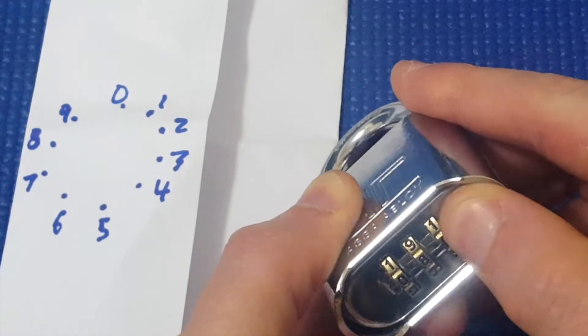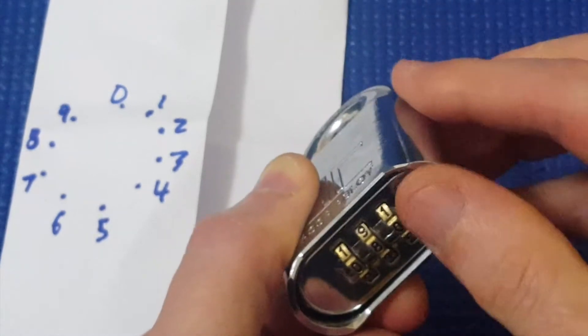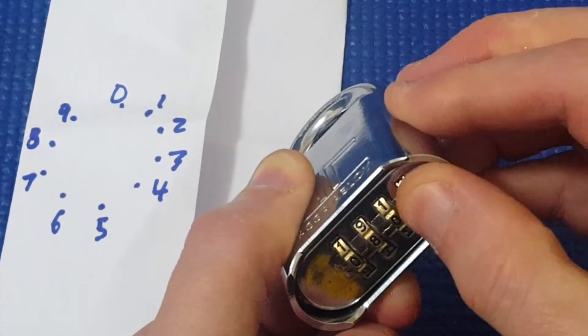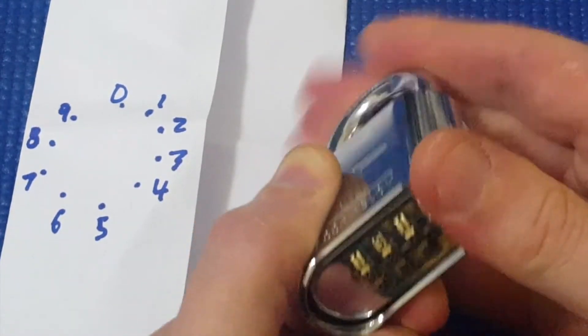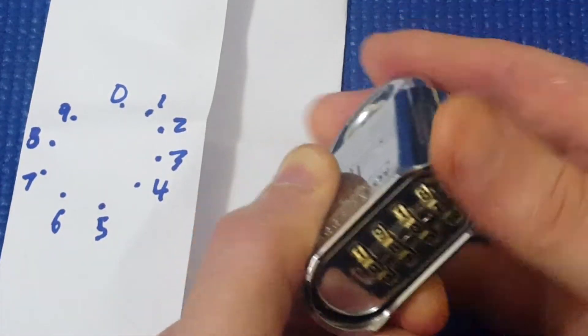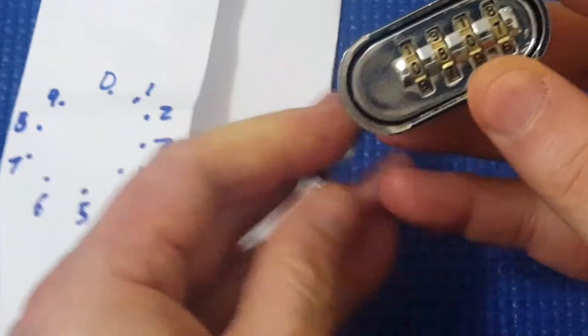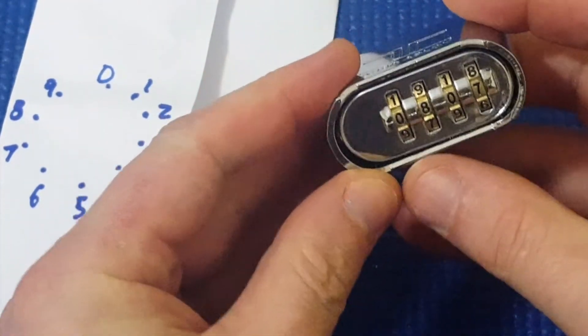So I'm going to try 1, 2, 3, 4, 5, 6, 7, and we've got to open. So that was the combination for this lock. 0, 8, 0, 7.